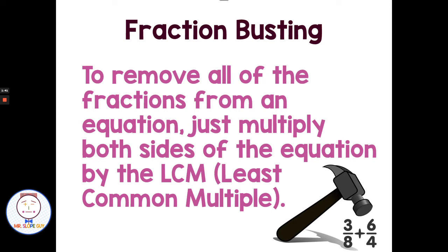Now, fraction busting: when we have one or more fractions in our equation, we can remove all the fractions from the equation just by multiplying both sides by the LCM — the least common multiple. As these equations look more and more difficult with more fractions, I can just check the denominators to find the least common multiple, then get rid of all of the fractions in a single step.